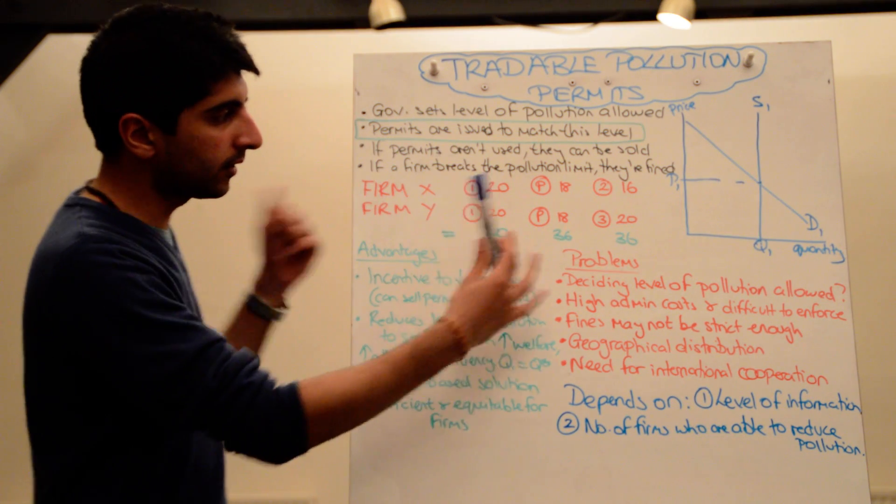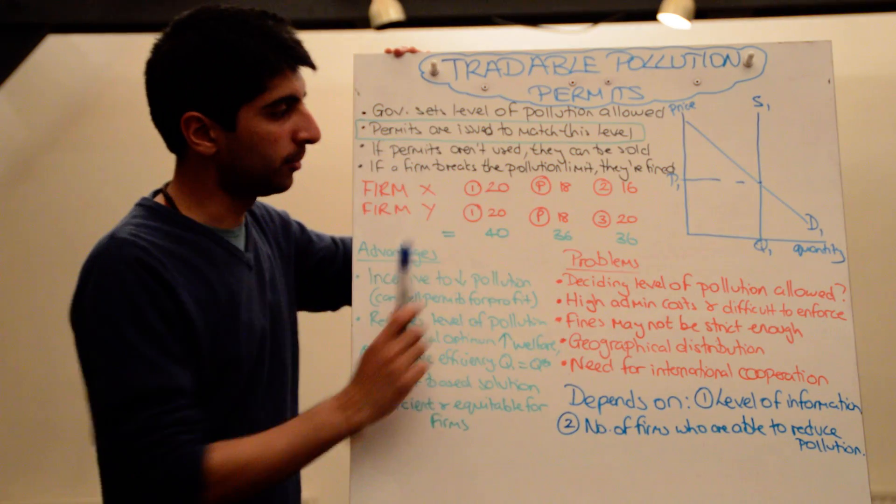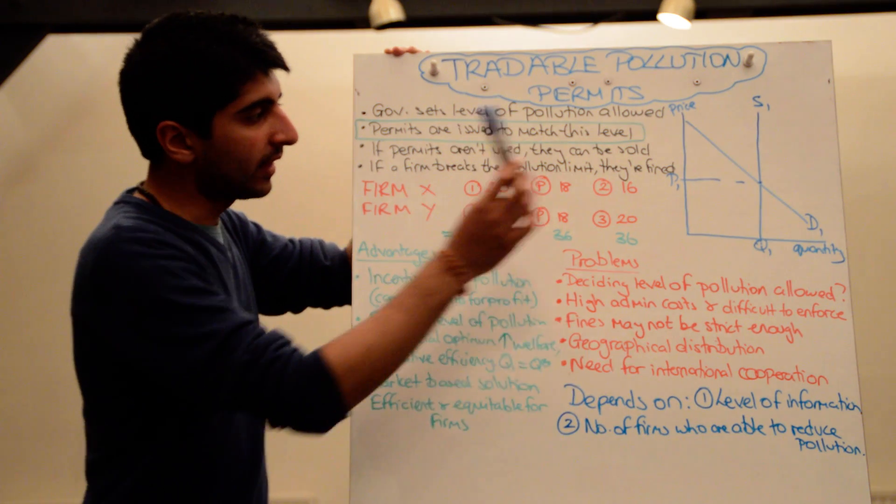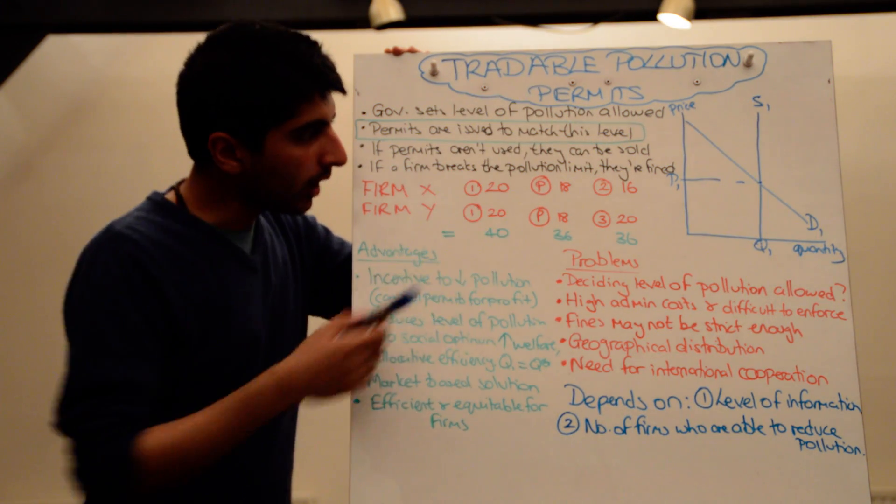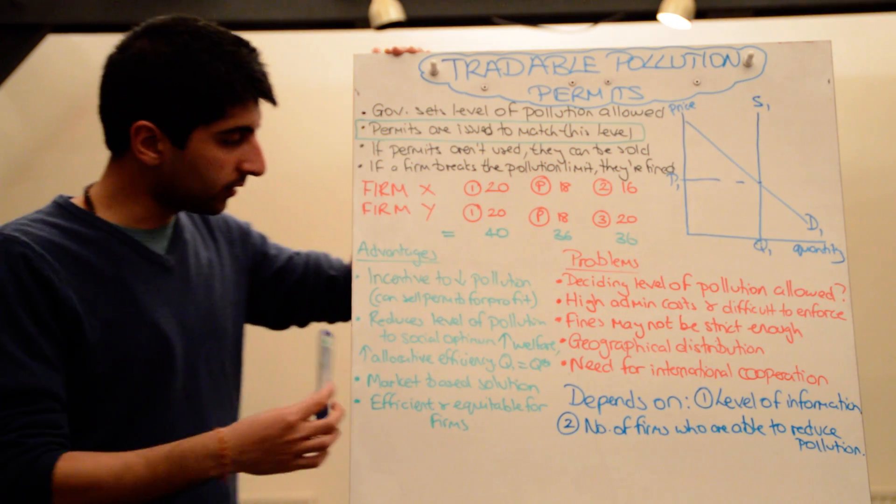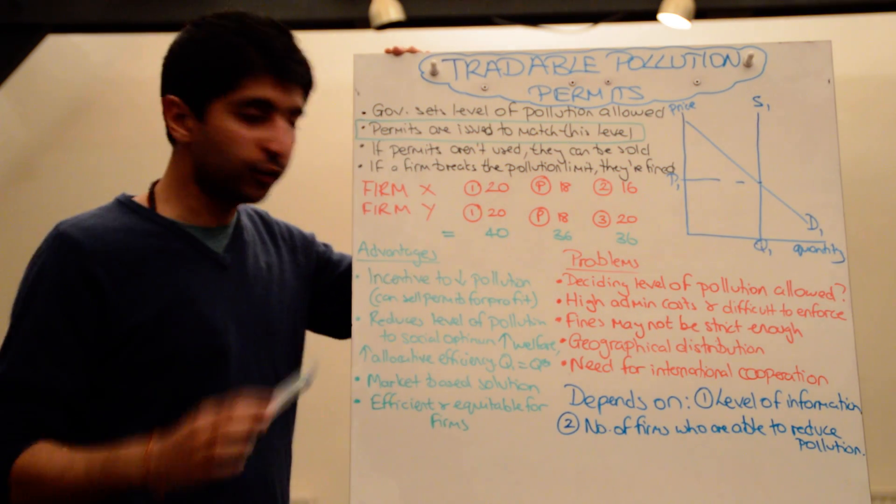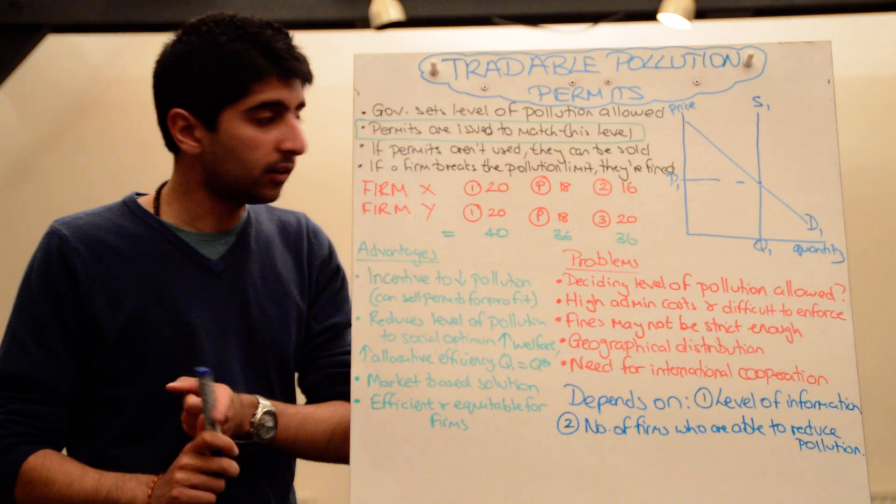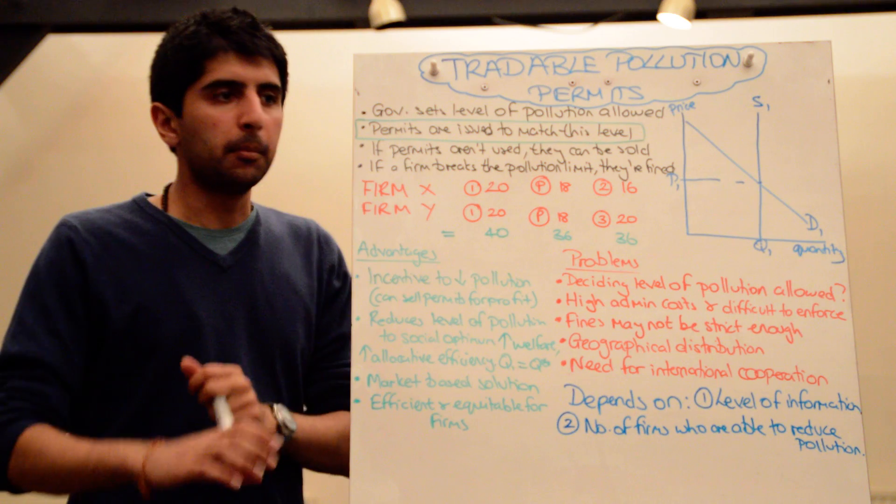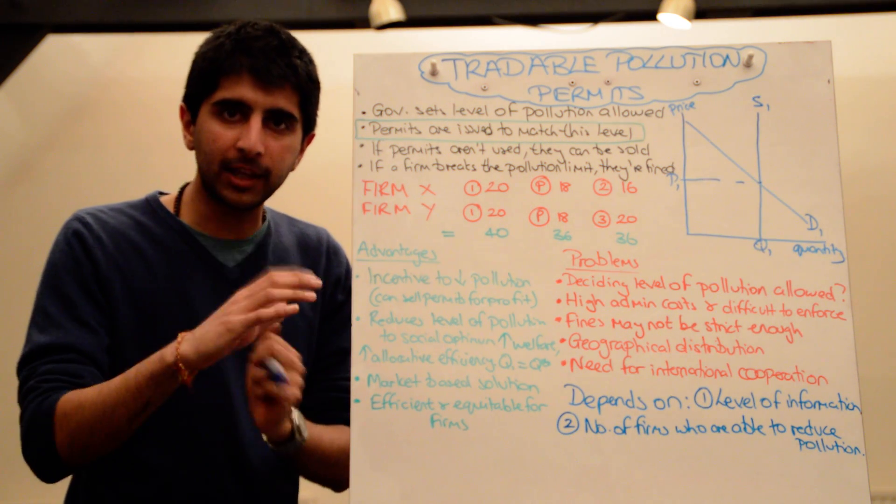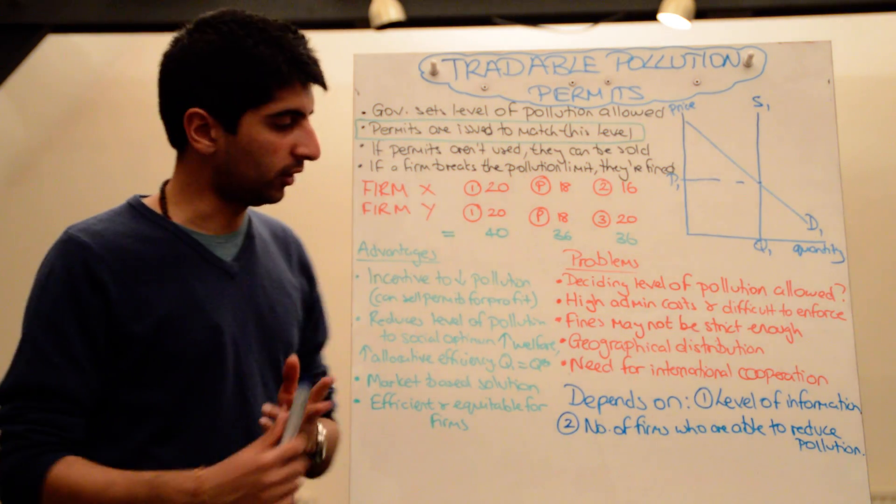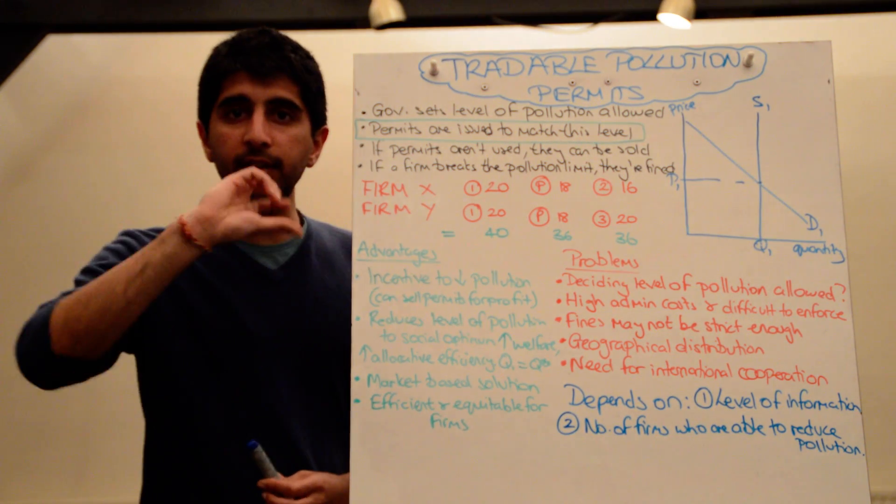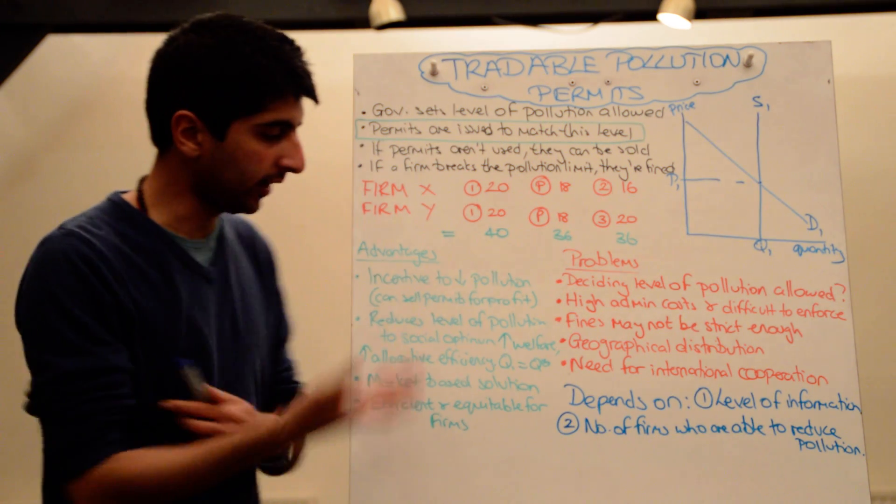So what are the advantages and disadvantages or the advantages and problems of pollution permits? And what does their overall effect depend on? Well, the advantage is that by distributing permits like this, there is an incentive for firms to reduce pollution. They can either reduce pollution by investing in green technology, or they can work on the machinery they have and find a way to make it more efficient, thus reducing pollution. Either way, they can reduce pollution, and if they reduce it successfully, they have an incentive then to sell extra permits on and make a profit. That's a good thing.